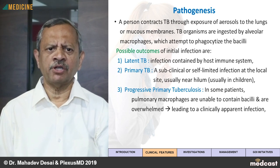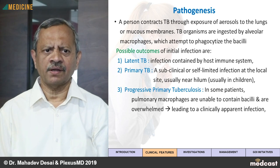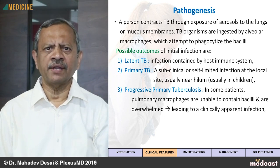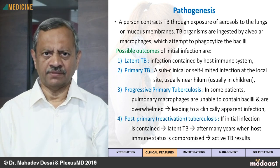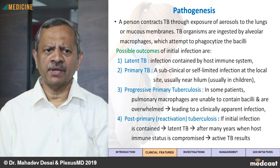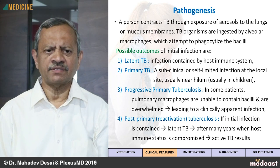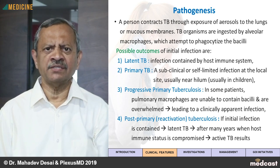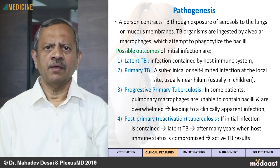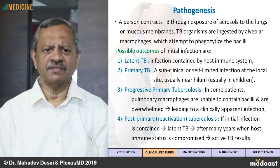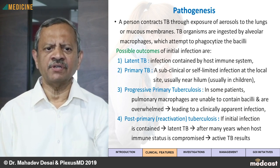Progressive primary pulmonary tuberculosis is one in which the pulmonary macrophages are unable to contain the bacilli, leading to clinically apparent infection. Post-primary or Reactivation Tuberculosis is what we see in most adult patients — after having a latency for a long time, the patient's immune status becomes weak for one or another reason and active tuberculosis results, which is called post-primary or reactivation tuberculosis.